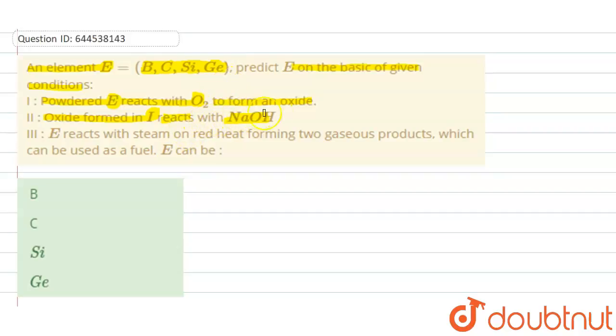Third is E reacts with steam on red hot forming two gaseous products which can be used as fuel. So we need to find out which E among these elements have all these three properties.